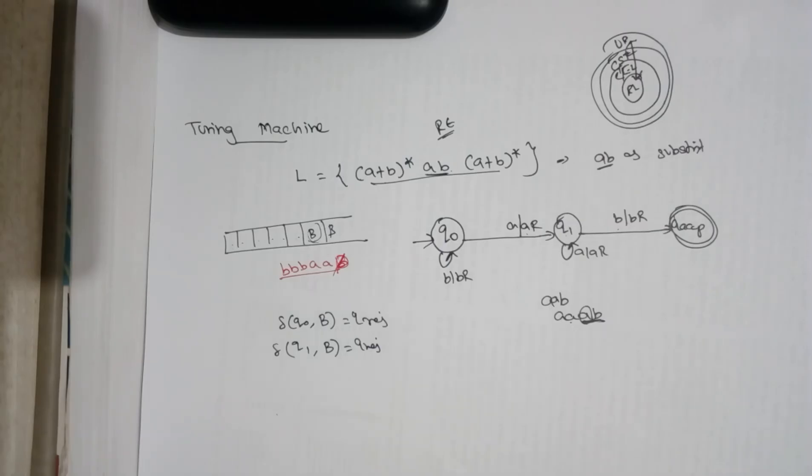So this is the final transition diagram that represents, that accepts a language that contains AB as a substring. Thank you.